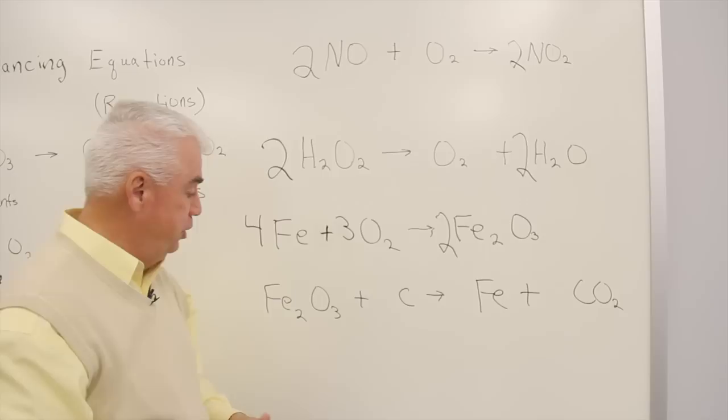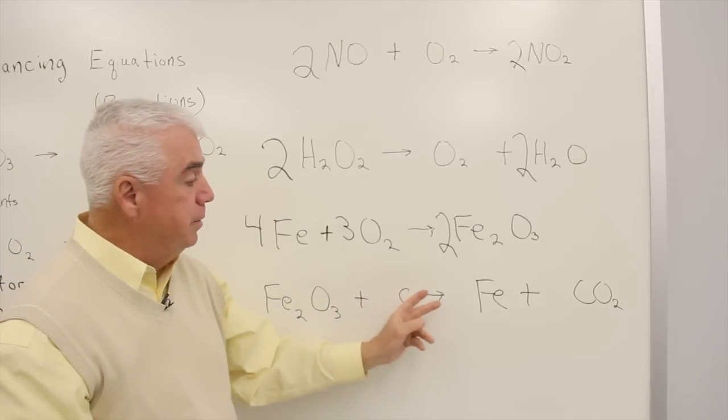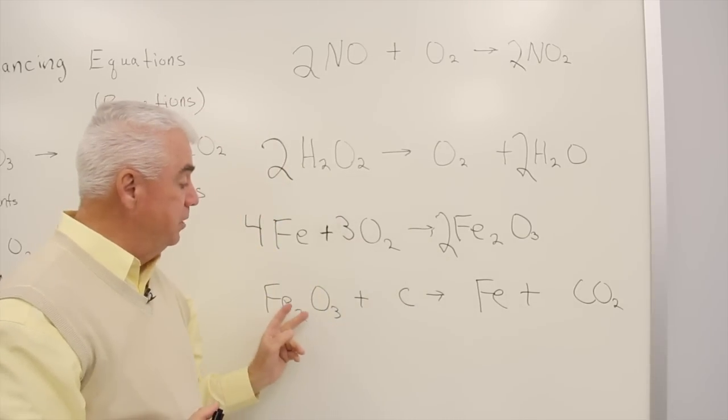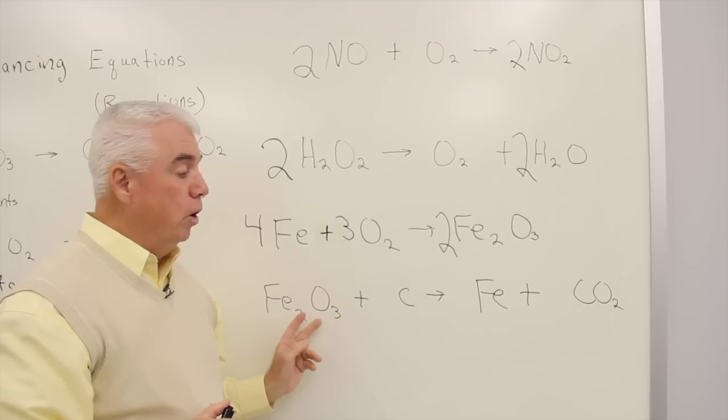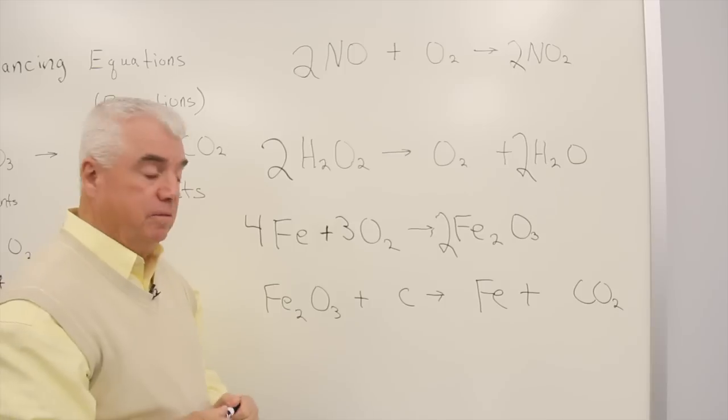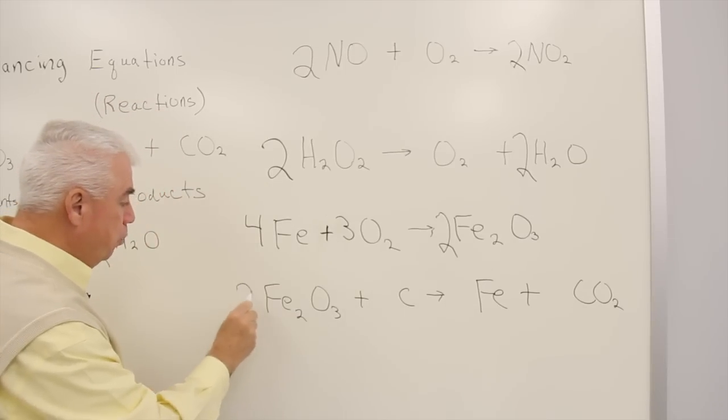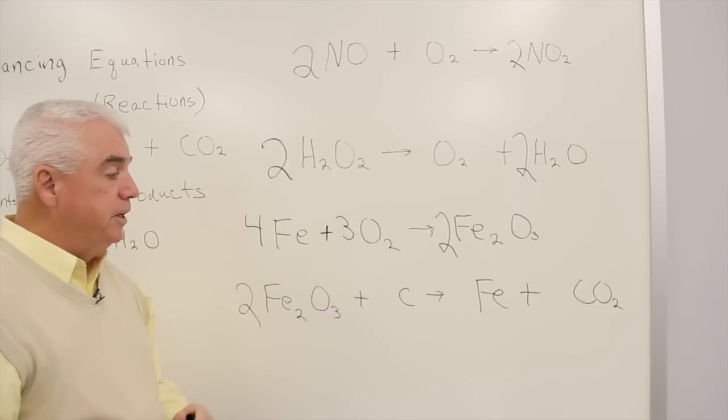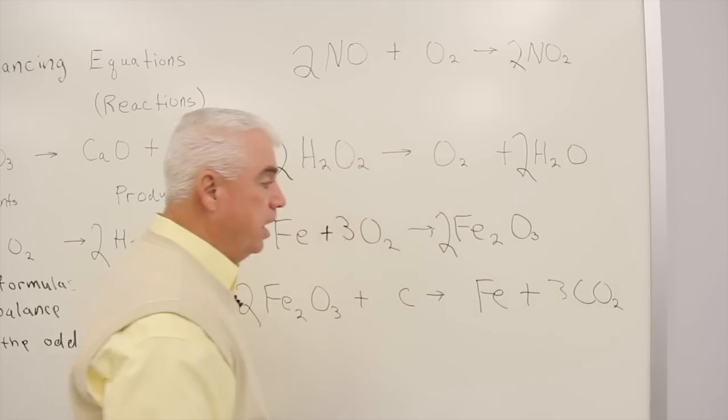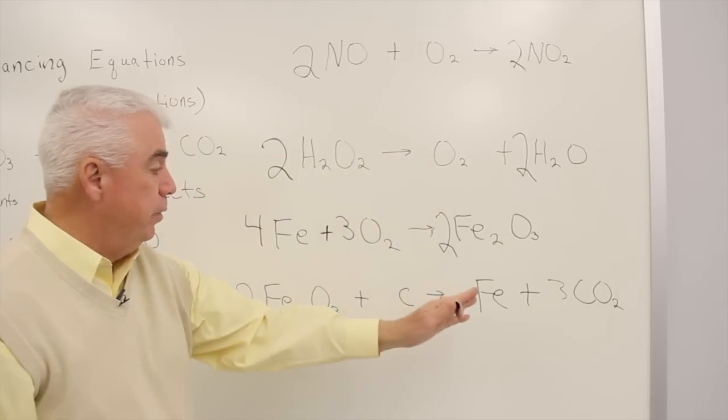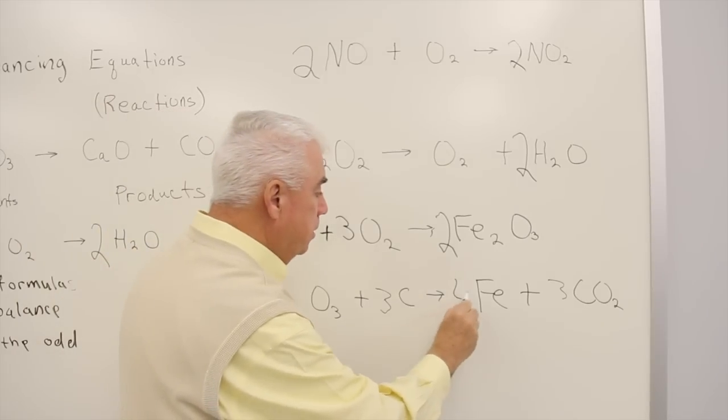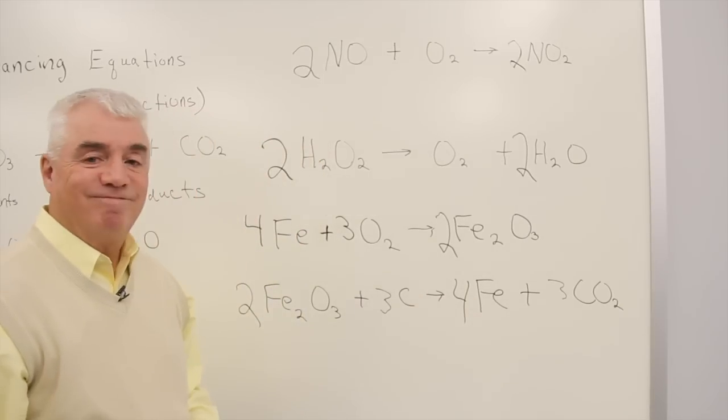Hey, here's your final exam question. Iron oxide plus carbon to give iron plus CO2. This is an important process in liberating iron from iron ore. 2 oxygens, 3 oxygens. Let's give it one more try. We've got a total of 6 oxygens on the left, 6 oxygens on the right. 3 carbons, 3 carbons, 4 irons, 4 irons. And we're there.